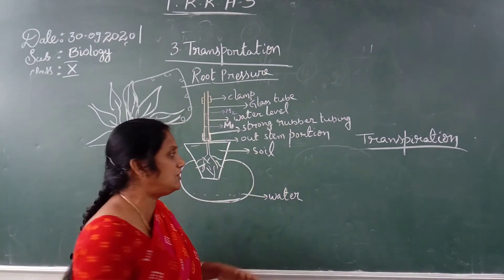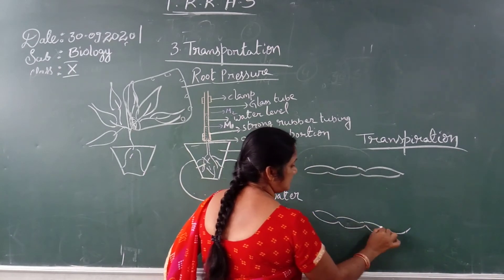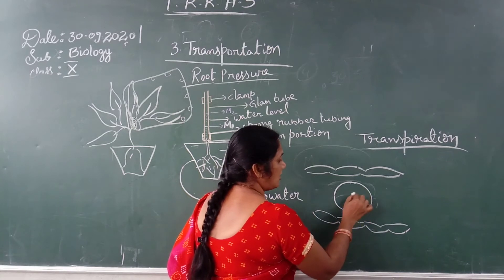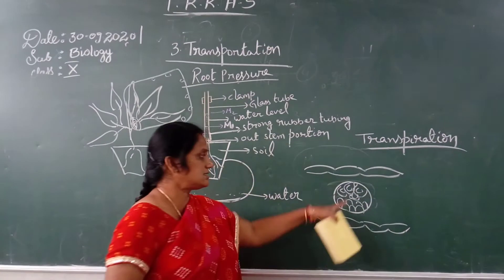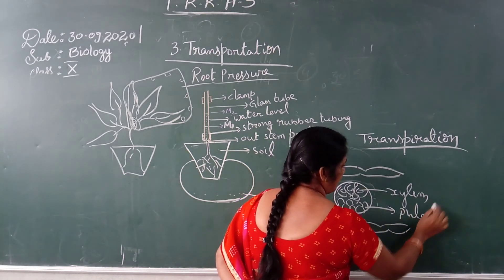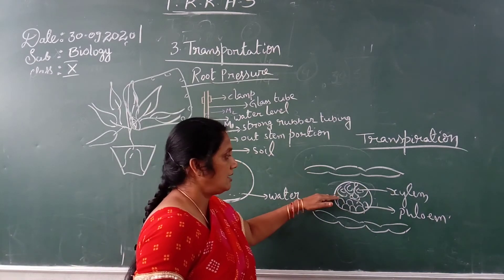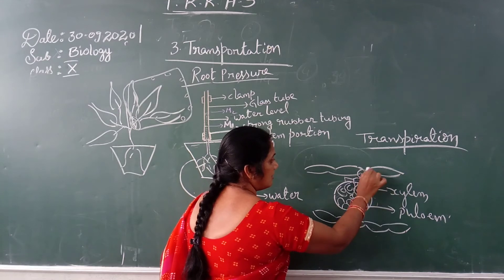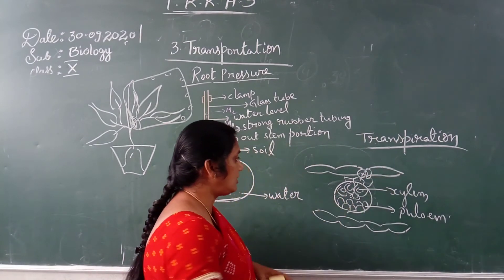Let us recall the mesophyll tissue in the leaves. There is the upper epidermis and the lower epidermis, and in between is the mesophyll tissue. The mesophyll tissue contains xylem towards the upper side and phloem below it. Water from the xylem enters into the mesophyll tissue, then moves into the stomata and comes out in the form of water vapor through the stomata.